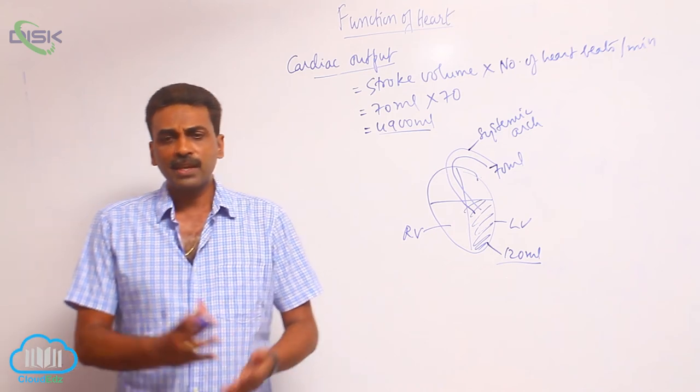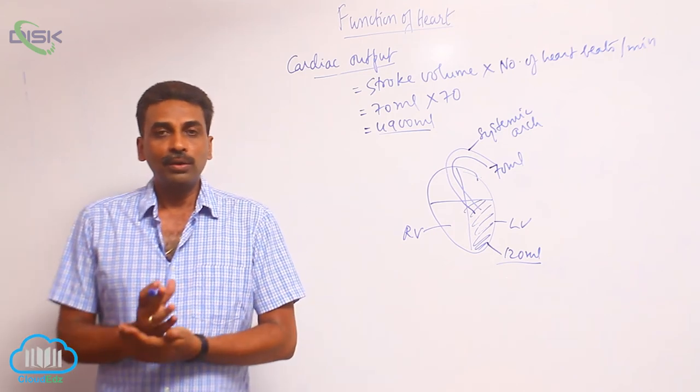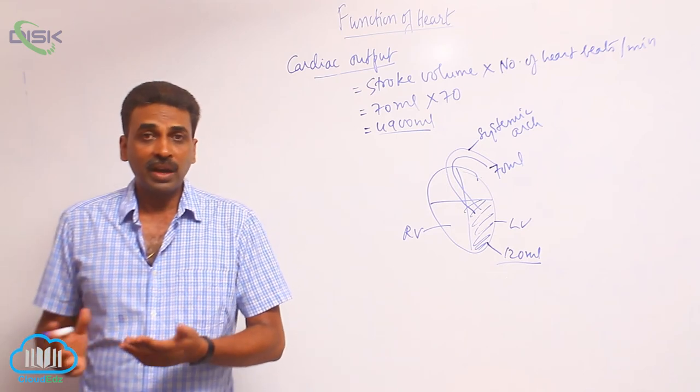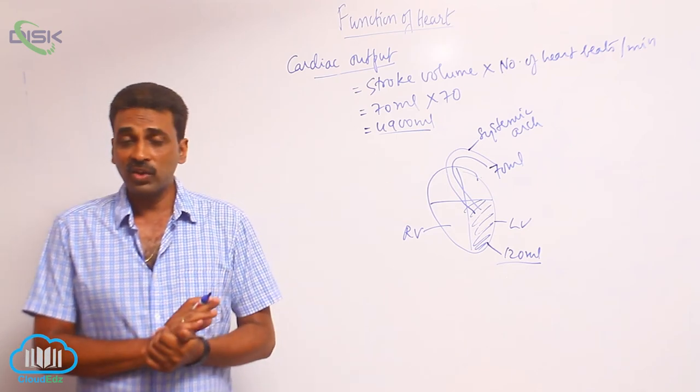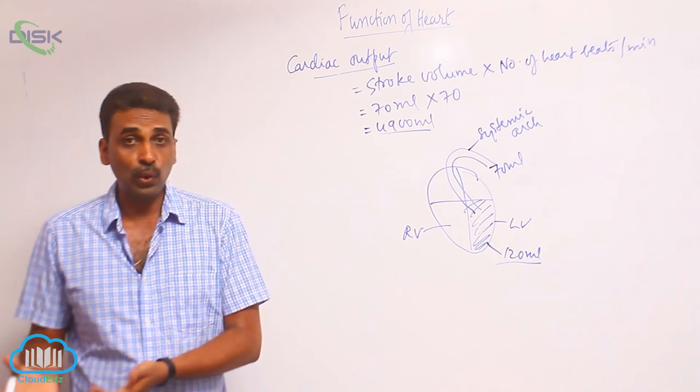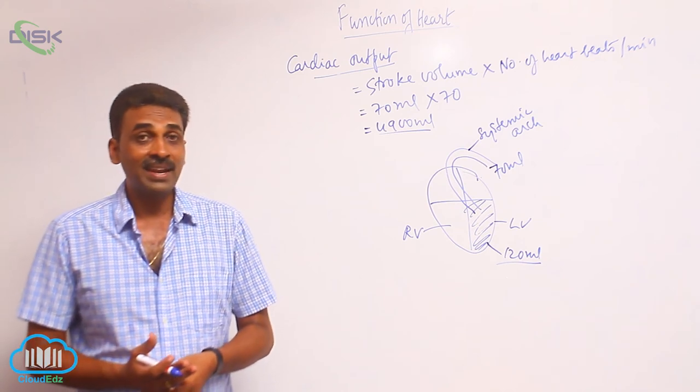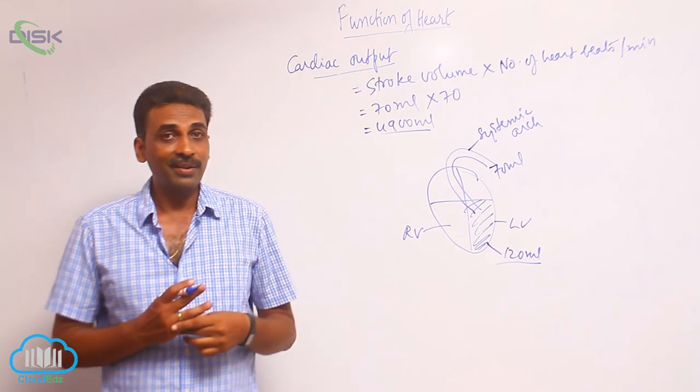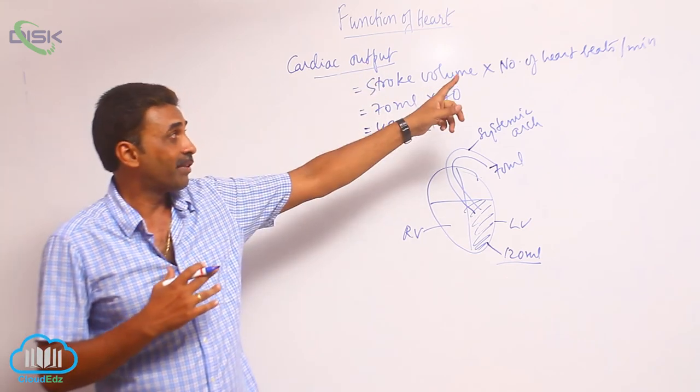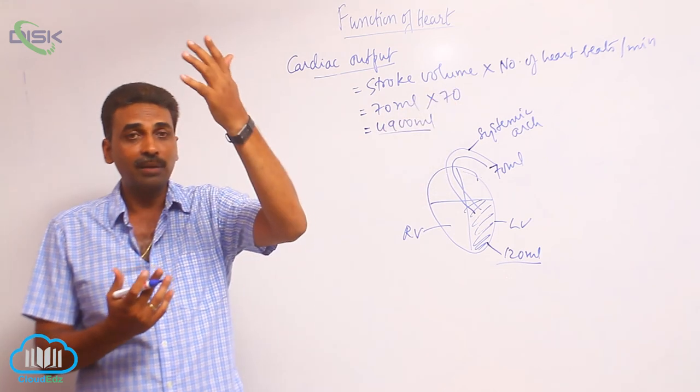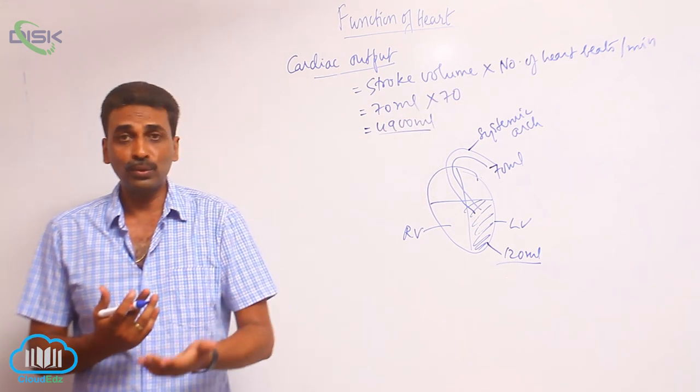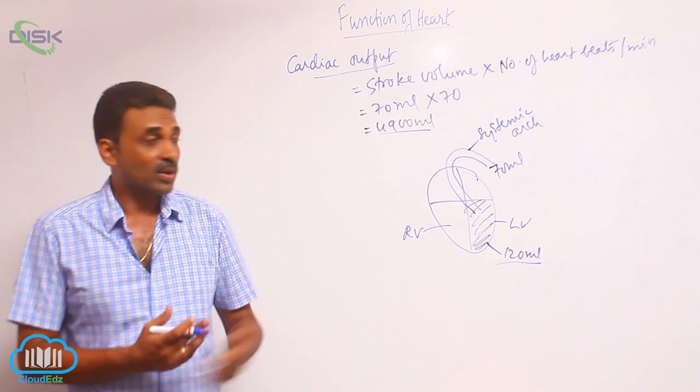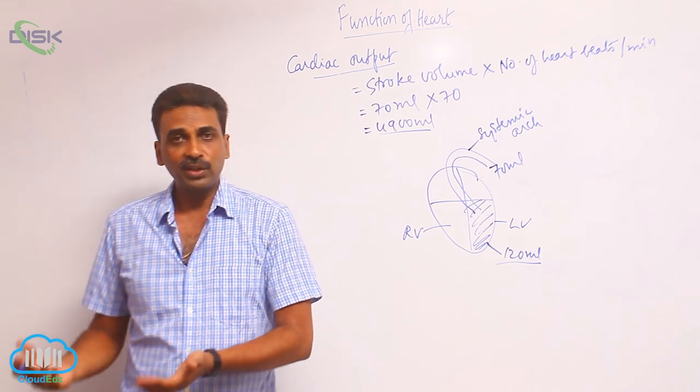Say for example, you have run away and you are far off from the snake, and that emergency condition no longer exists. Under that condition, parasympathetic nerves are stimulated. That elevated heartbeat from 100 beats - the heartbeat has come back to 70 again. Cardiac output also gradually will come down.